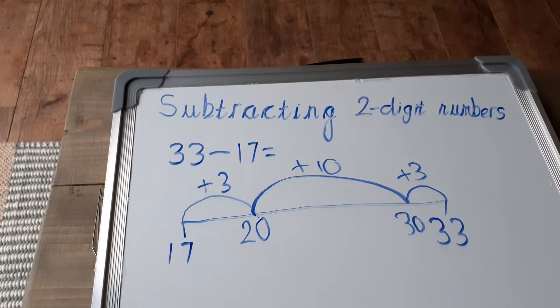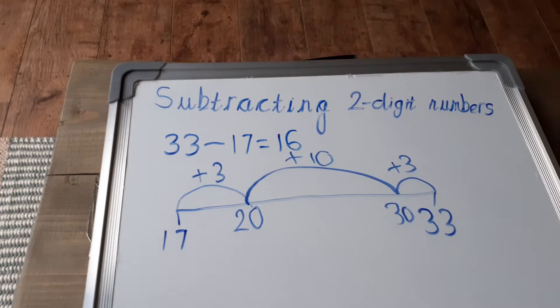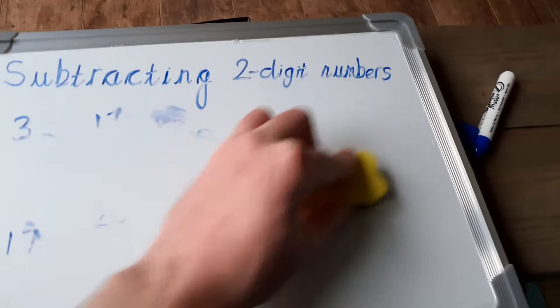So there we go. We've used our number line to find the difference between two two-digit numbers. So let's do another one. I'll quickly rub this one out, and we'll do another example to hopefully help you when you come to do this yourself.